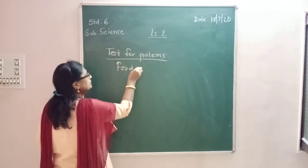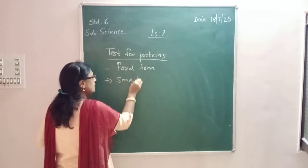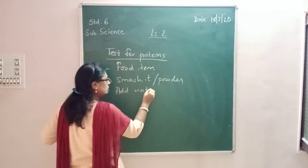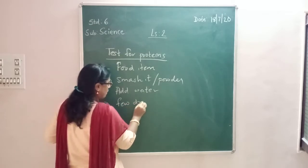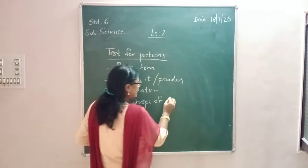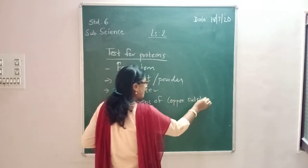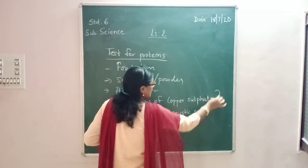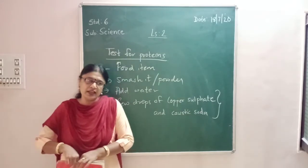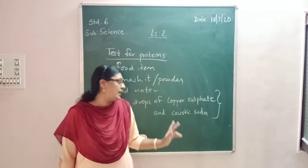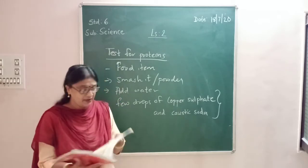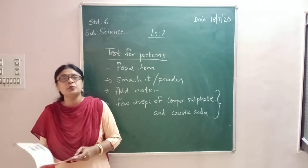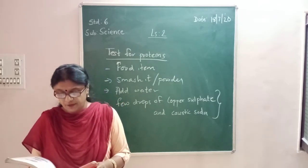Take a food item, mash it or make its powder, then add water, and then a few drops of copper sulfate and caustic soda. These are the names of 2 chemicals — just remember their names. Add 2 or 3 drops of copper sulfate and caustic soda to the test tube and shake it well. Did the contents of the test tube turn violet? A violet color indicates the presence of proteins in the food item.